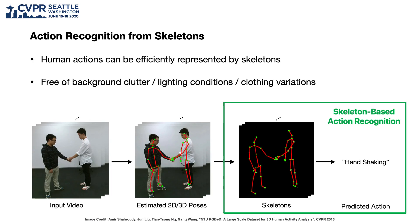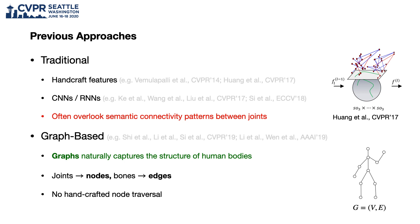Action recognition in videos is an important task with many applications. As an alternative to learning directly from RGB inputs, we can leverage pose-estimation systems to instead recognize actions from the human skeletons. Traditionally, these skeletons are represented as a set of independent joints, and their models handcraft the aggregation of joint features. However, they often overlook the semantic connectivity patterns between joints. Most recent methods now formulate actions as graphs where joints are nodes and bones are edges, and this can better capture the structure of the human body.